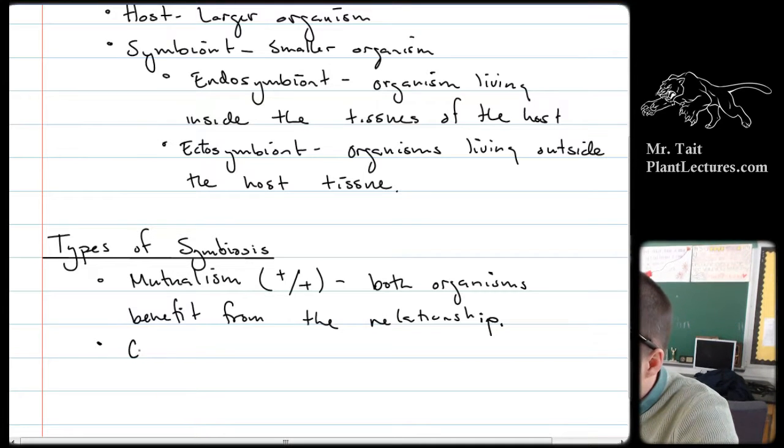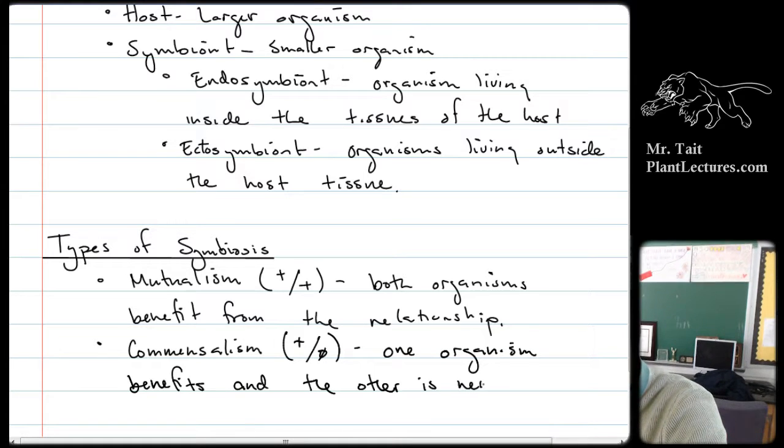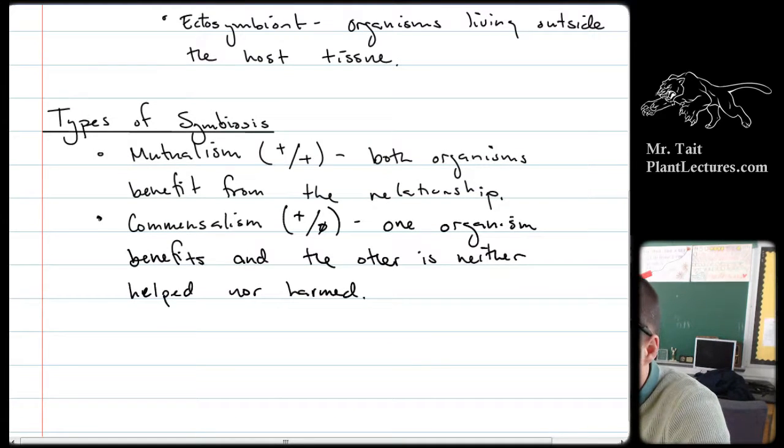Then you've got commensalism. Commensalism is symbolized as a positive and then a zero. And that means that one organism has some benefits, and the other is neither helped nor harmed. So it doesn't matter at all to them that that other organism is there.